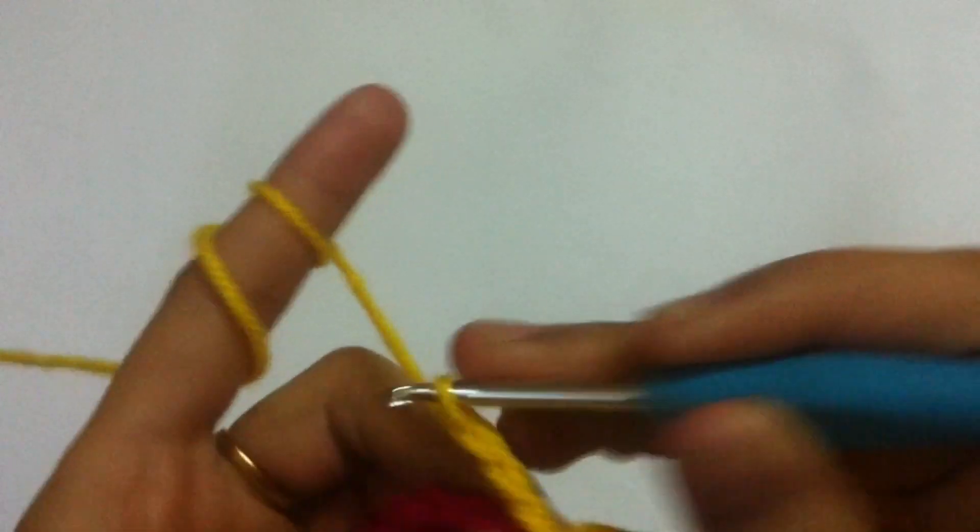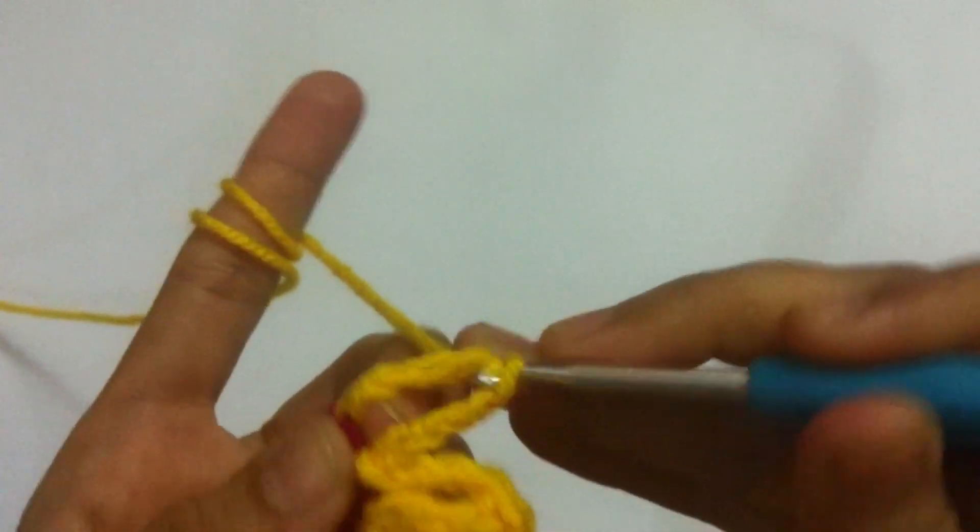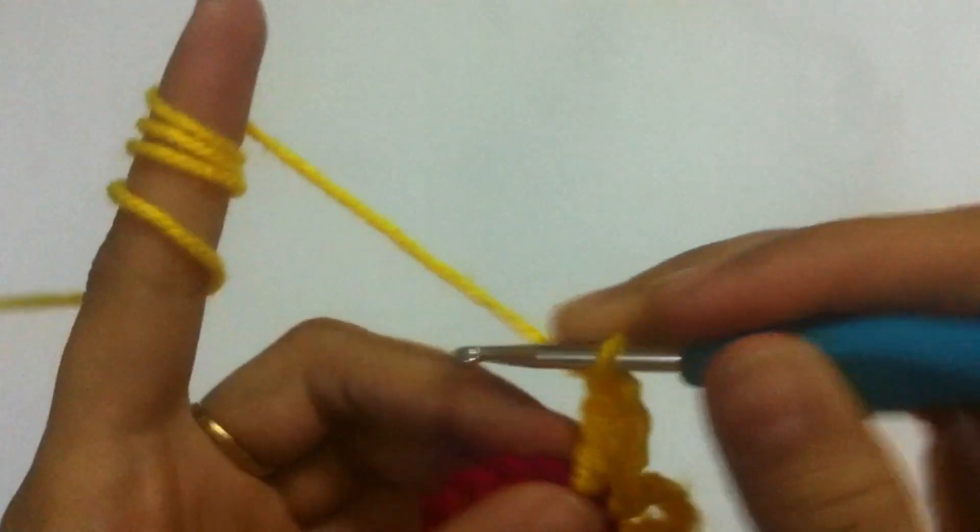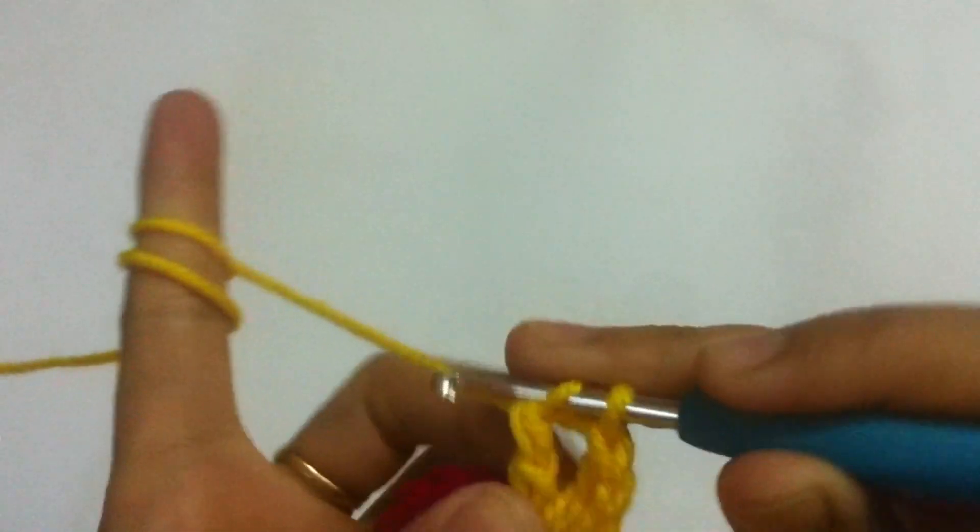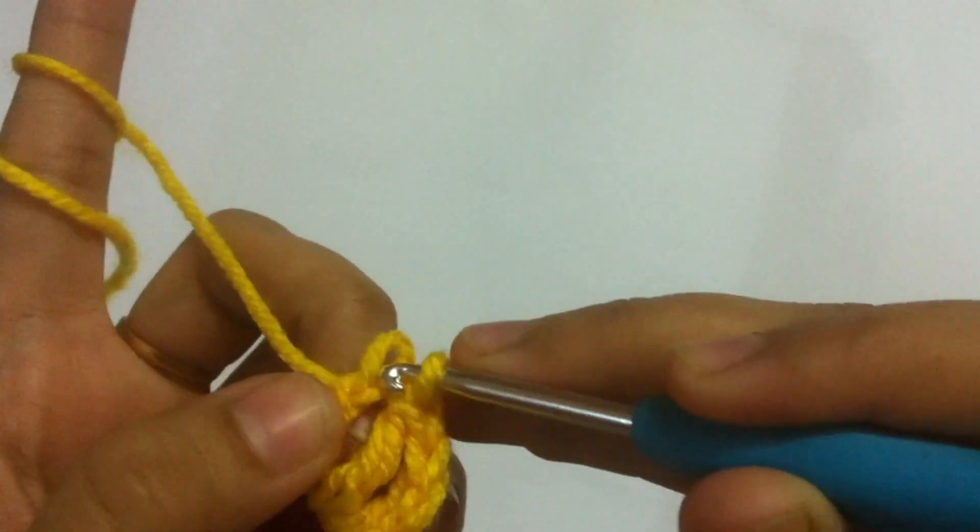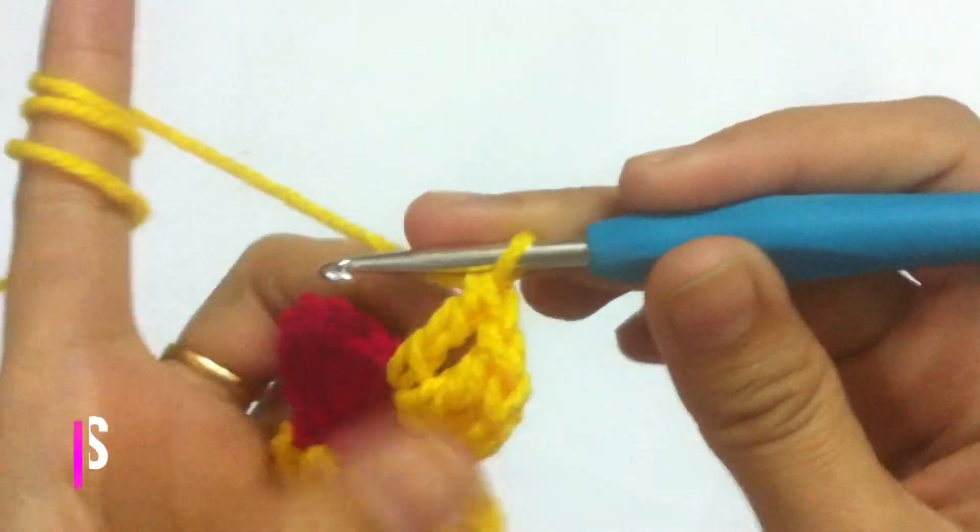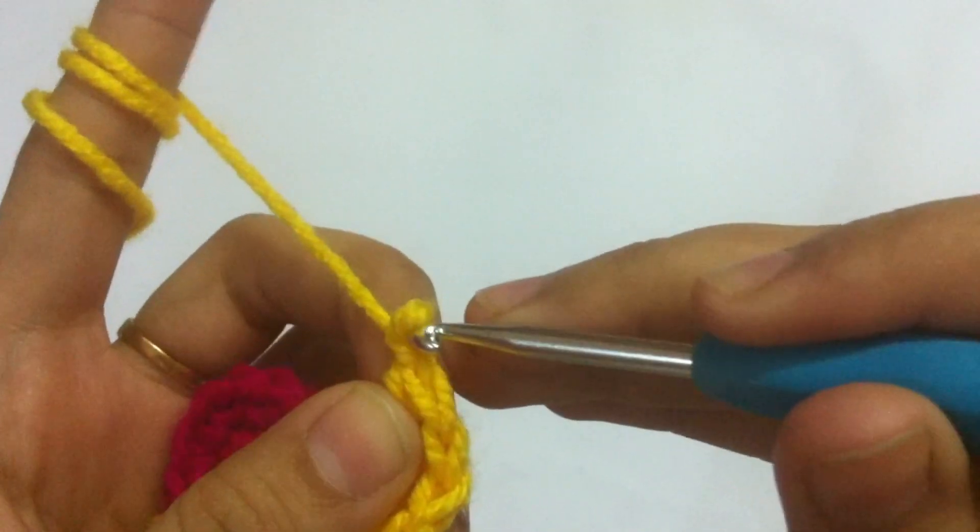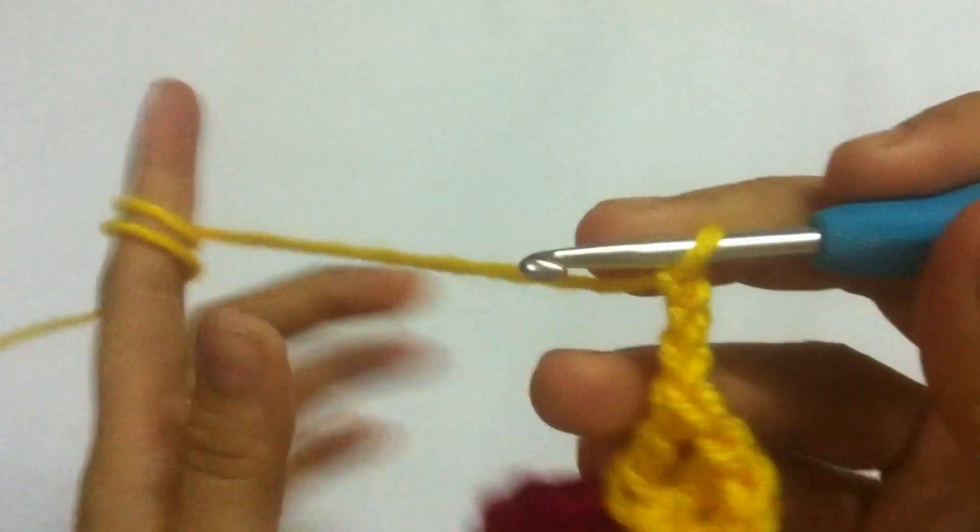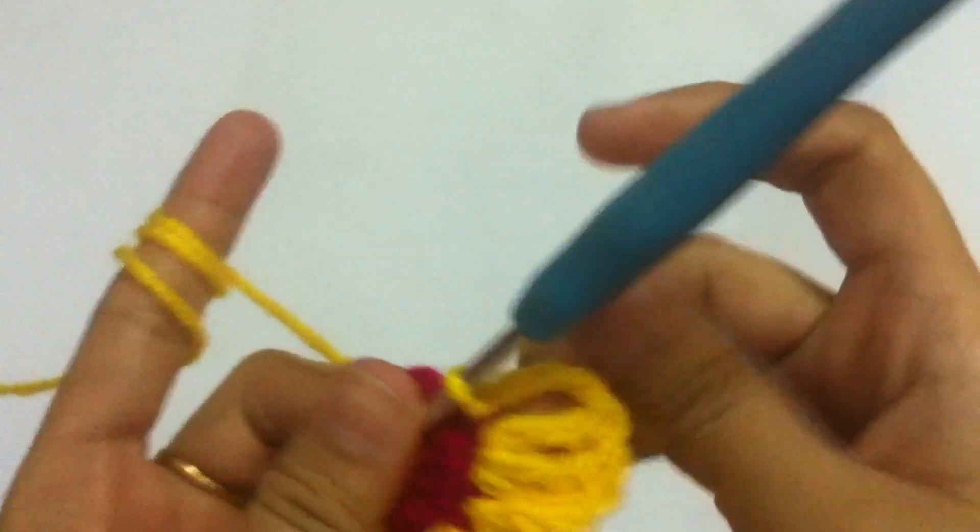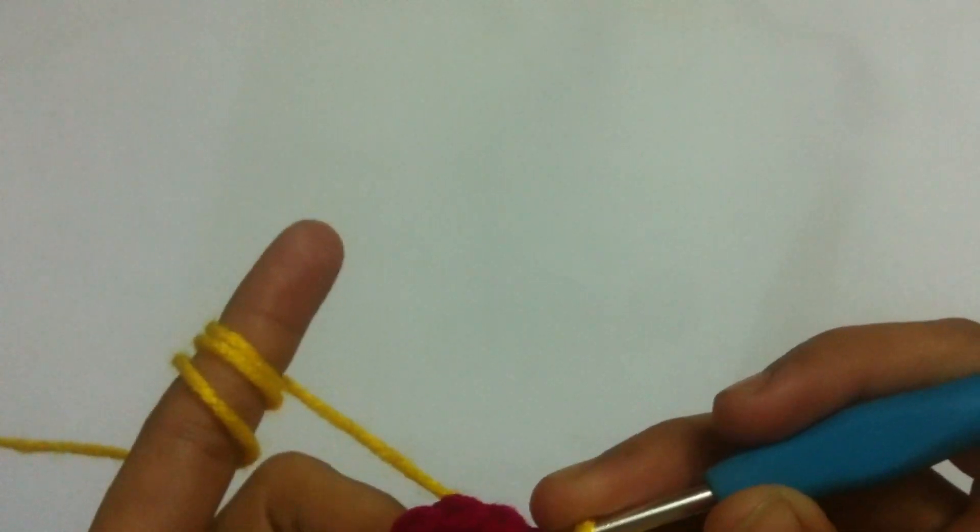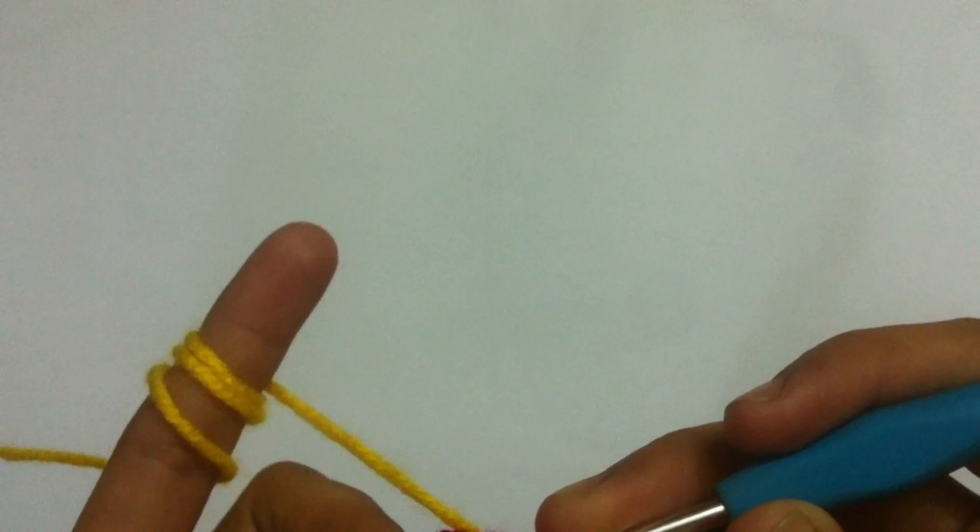Again, repeat the same formula. Chain three, yarn over two times, three treble crochets into the very next stitch. Until now, we have made three petals and three more petals to go. Join me back when you have finished your five petals all together. The third and the last one we are going to do it together.